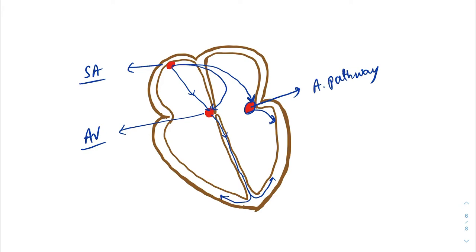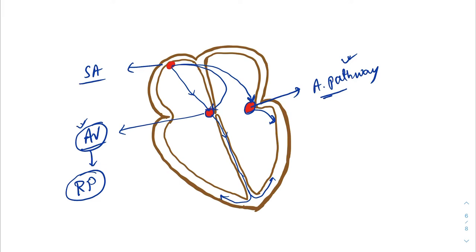What is the difference between the accessory pathway and the AV node? The AV node is specialized conductive tissue and has a long refractory period, whereas the accessory pathway is not specialized tissue — it is actually part of the myocardium itself.